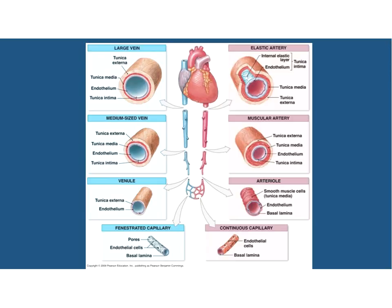In some books, sinusoidal capillaries are a separate category, but our book talks about them as a type of fenestrated capillary. These are capillaries that are even more flattened, more irregular, and more robust. In the liver, kidney, and spleen, they allow blood to pool in an area around large populations of white blood cells so that macrophages can interact with the blood cells themselves and remove them out of circulation.